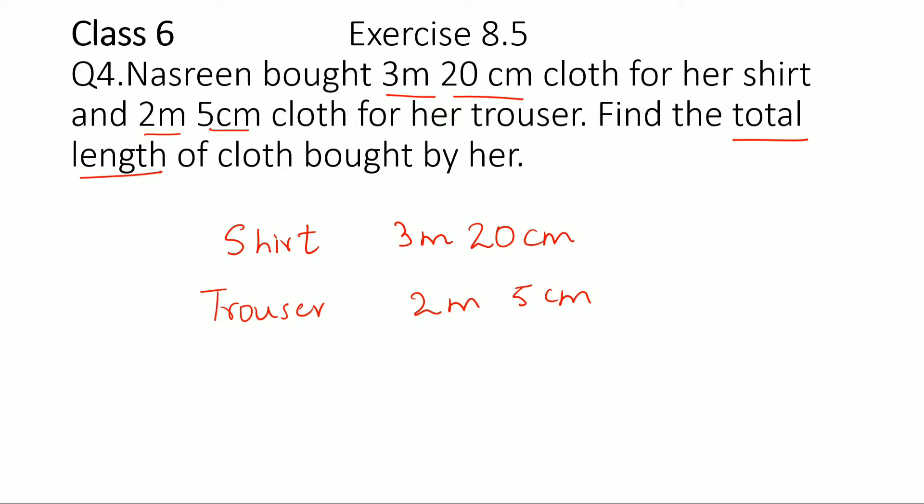So total length means we need to add up these two. Now this is a simple addition problem, but what makes it difficult for the student is that here it's given as 5 centimeter. So some students might just add 3.20 and 2.5, and this is actually not the correct way of doing it because here it is 5 centimeter.